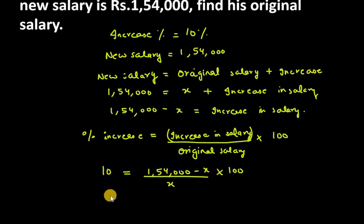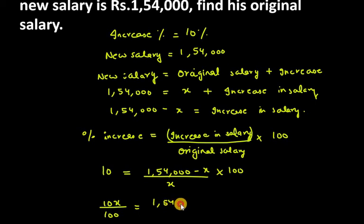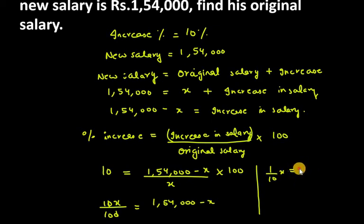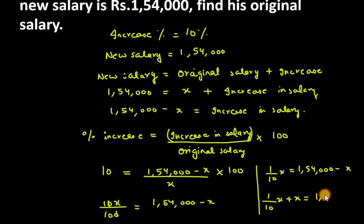Now here, we first need to reduce this. Take X to the other side and bring 100 to the bottom — cross multiplication. So, 10X over 100 equals 154,000 minus X. The zeros cancel, and we get: (1/10)X equals 154,000 minus X. Now bring the minus X to the left side, so this will be (1/10)X plus X equals 154,000. From here we will get the value of X.